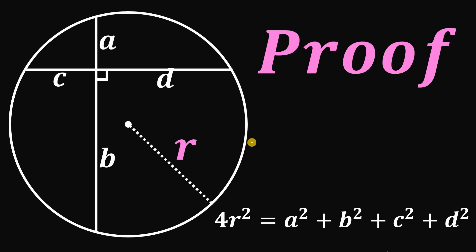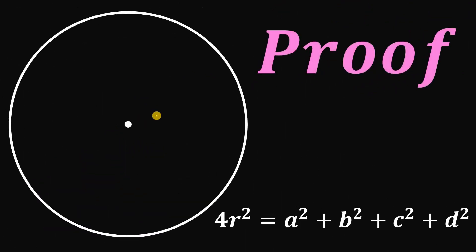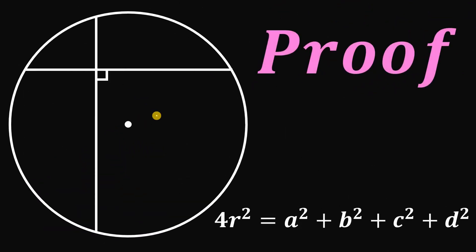Today, I will show you the proof that relates the radius of the circle and the segments A, B, C, and D. So let's begin. Given this circle, let's draw two perpendicular chords with corresponding lengths A, B, C, and D.